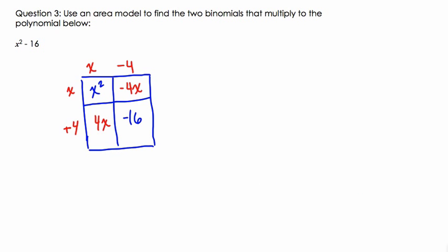And if I add these things together to check what's happening, I have x squared plus these two regions here. We have negative 4x plus 4x, and then finally negative 16. Notice, if I add these back together, it does represent the area that we originally had.